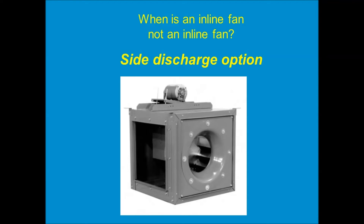Here's a little pop quiz: when is an inline fan not an inline fan? Well, it's when we use the side discharge option. This square inline fan is really just a pressurized plenum — that little centrifugal impeller is like a plug fan, just drawing air in and pressurizing the box. The air will leave whichever way is the path of least resistance. Most of the time the back of the fan is open so air comes in one side and leaves the other inline, but if we put a panel on the back and open up one of the sides with a duct collar, the air will turn 90 degrees and shoot off the fan from the side — with no loss of performance.